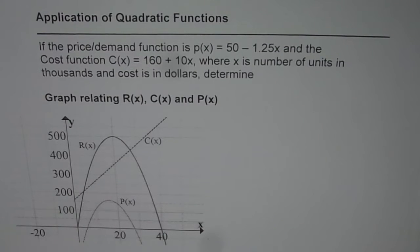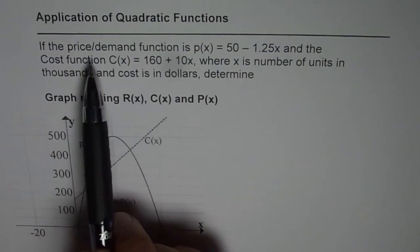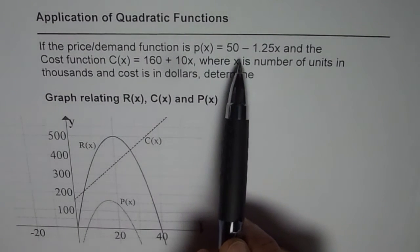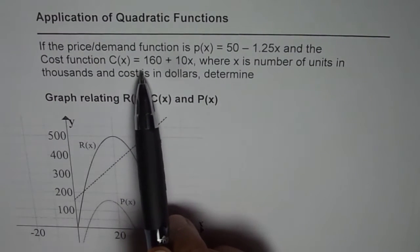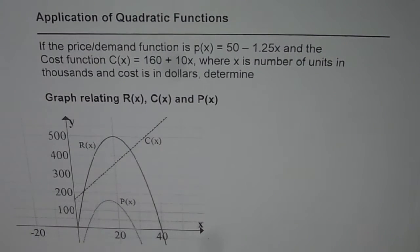I am Abdul Kumar and in this video we will see the relation between the demand function, cost function, revenue, and profit with the help of their graph. We are discussing a particular application question which is: if the price or demand function is P(x) = 50 - 1.25x and the cost function C(x) = 160 + 10x, where x is the number of units in thousands and cost is in dollars, determine...